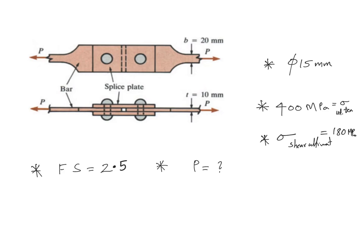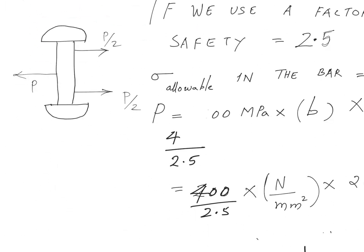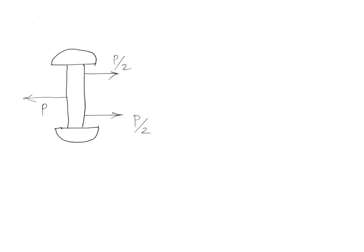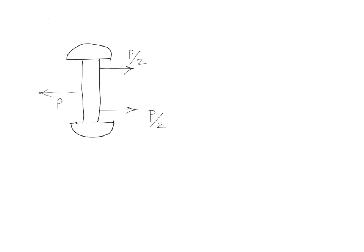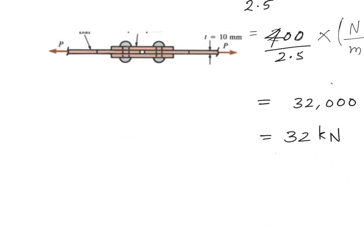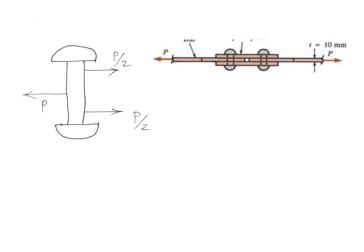We need to calculate what is the maximum load carrying capability that this particular rivet has got with a factor of safety of 2.5. Now let's go ahead and do that. I am just taking this little portion over here and then I am zooming it. This will be the free body diagram of the rivet.